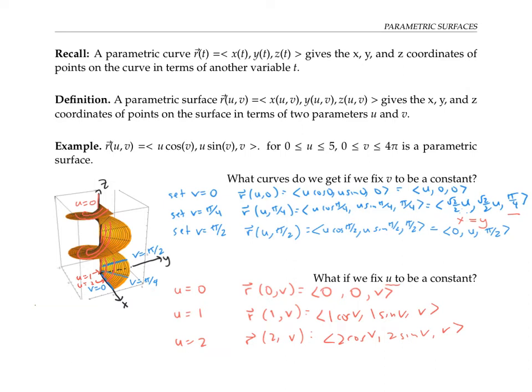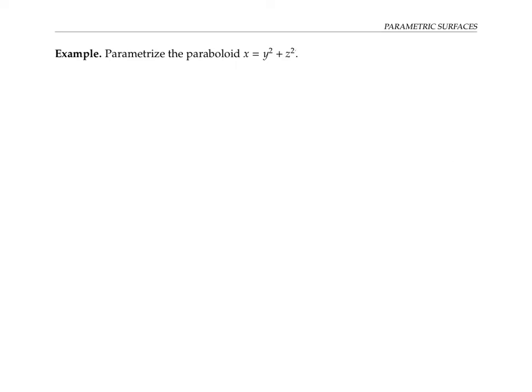The curves of constant u and constant v are called grid curves, and they can be a good way to help identify or visualize a parametric surface. Sometimes we want to find a parameterization for a surface given to us in Cartesian coordinates — that is, we want to rewrite x, y, and z in terms of two new variables, u and v.